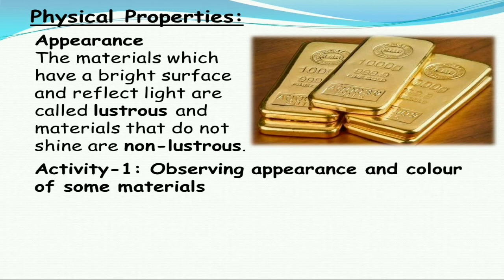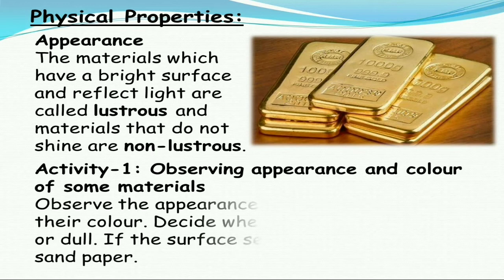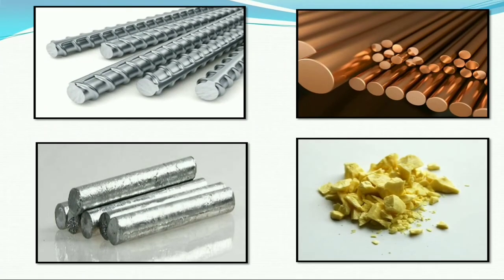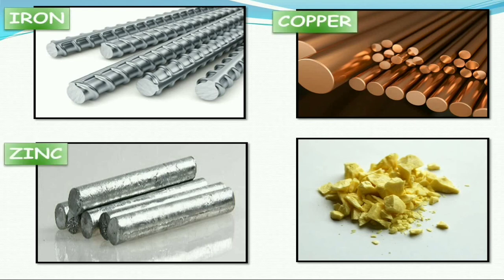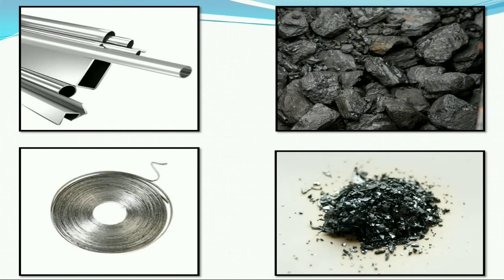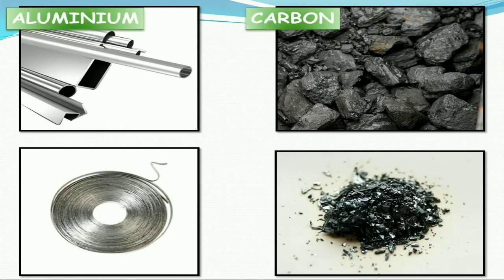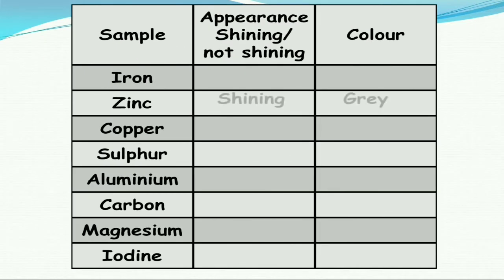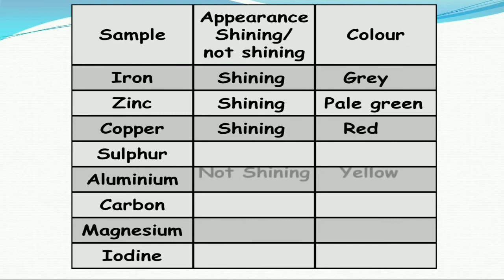Let us do Activity 1 by observing the appearance and color of some materials. We have taken some samples and will check whether they have a shiny surface or not. The four materials are iron bars, copper rods, zinc rods, and sulfur. We also check four more samples: aluminium, carbon, magnesium, and iodine, noting whether their surfaces are shining or not.